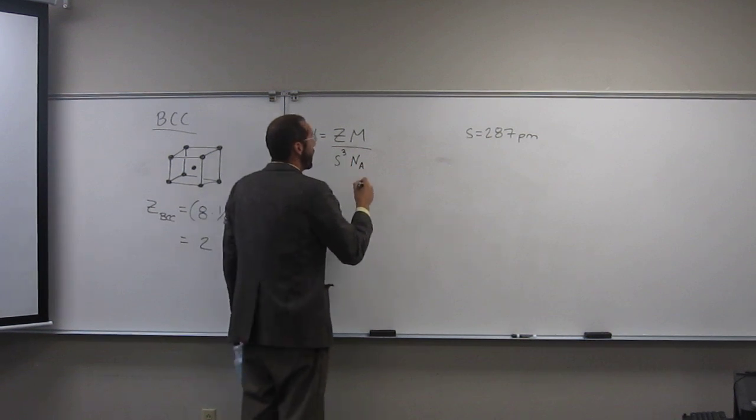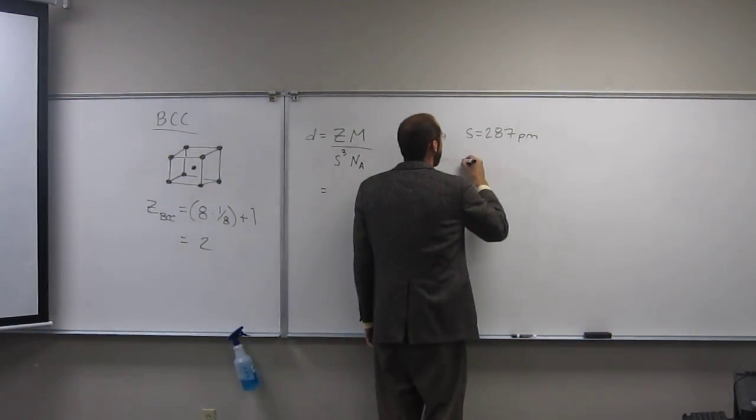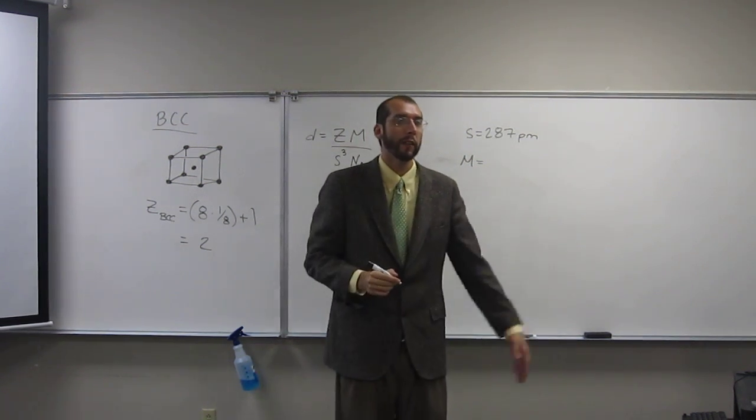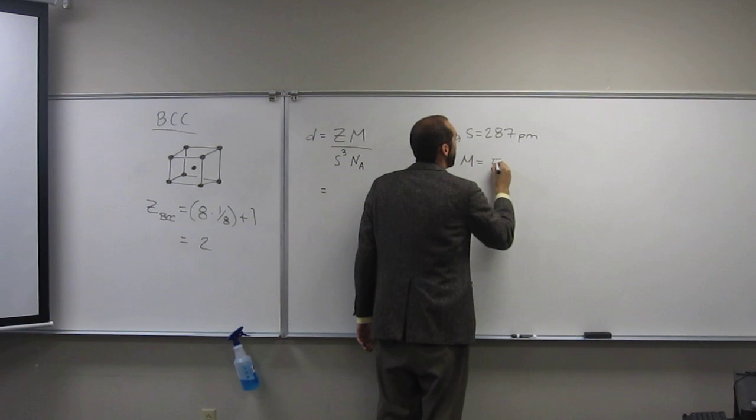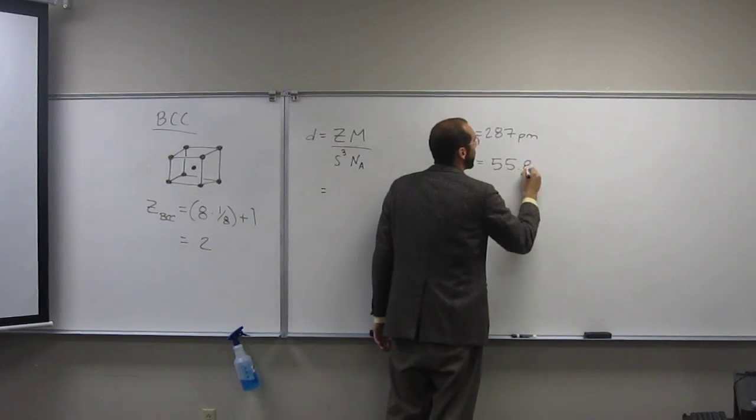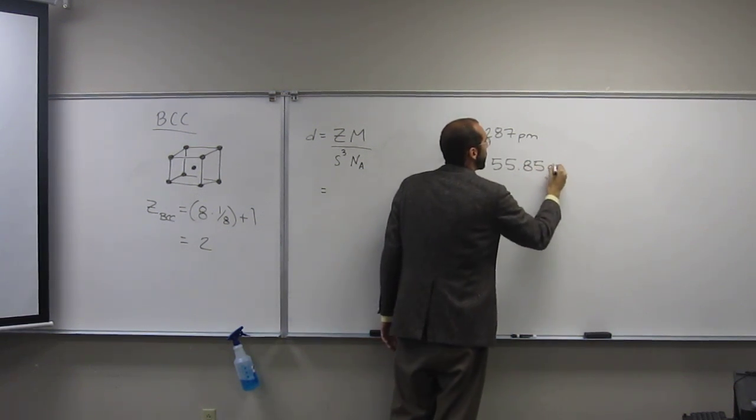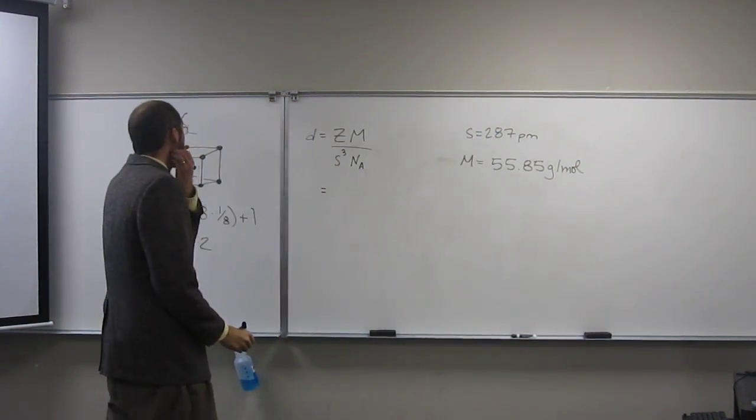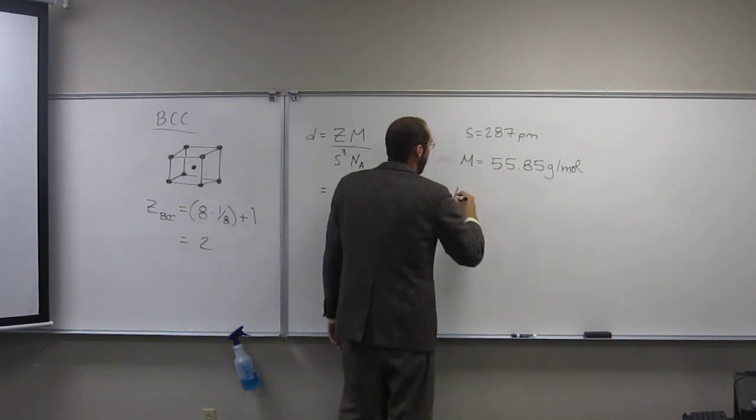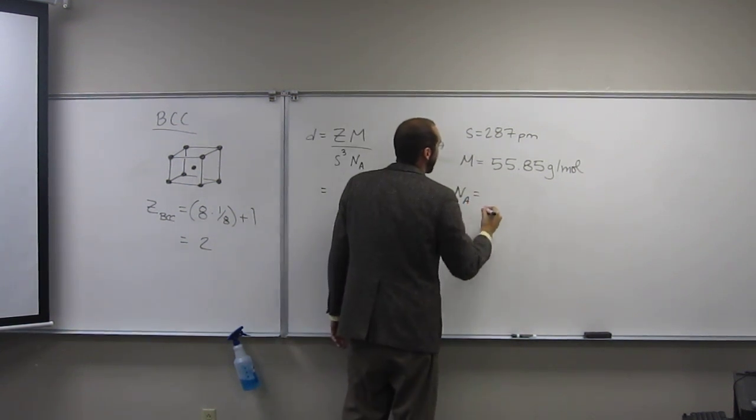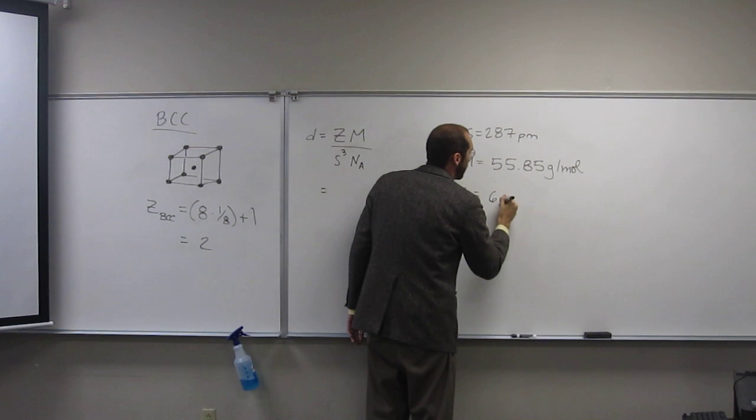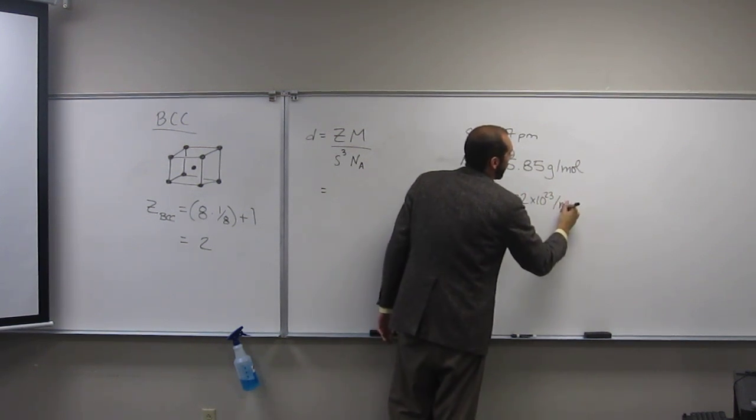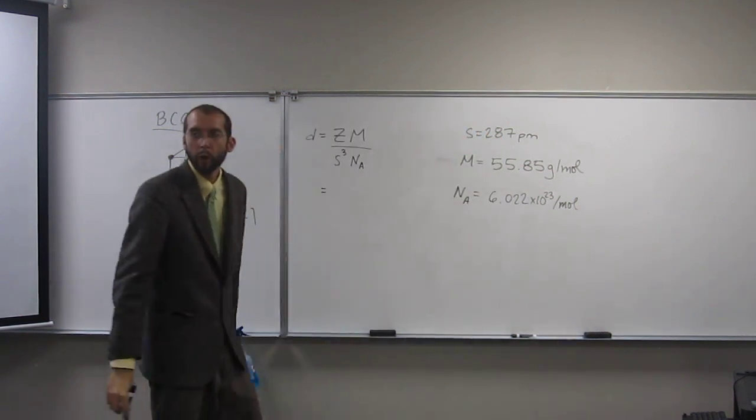Molar mass, well we're looking for iron. How do we get that? Look up at the periodic table, 55.85 grams per mole. Psi we know, and Avogadro's number more than likely will be given to you, 6.022 times 10 to the 23rd per mole.